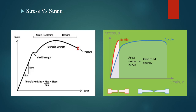After the ultimate strength — the maximum stress value — if we keep increasing strain, it is called necking. The value of stress starts decreasing from the point of ultimate strength, keeps decreasing, and at a particular value of strain, the material becomes fractured.